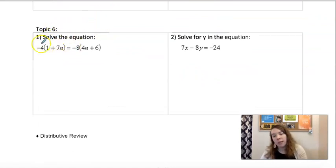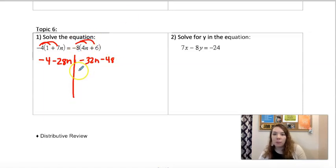All right. This one we're solving the equation. So we distribute first. Negative 4 minus 28n equals negative 32n minus 48. All right. So then I like to move the smaller one. Negative 32 is smaller. And negative 28 keeps things nice and positive.